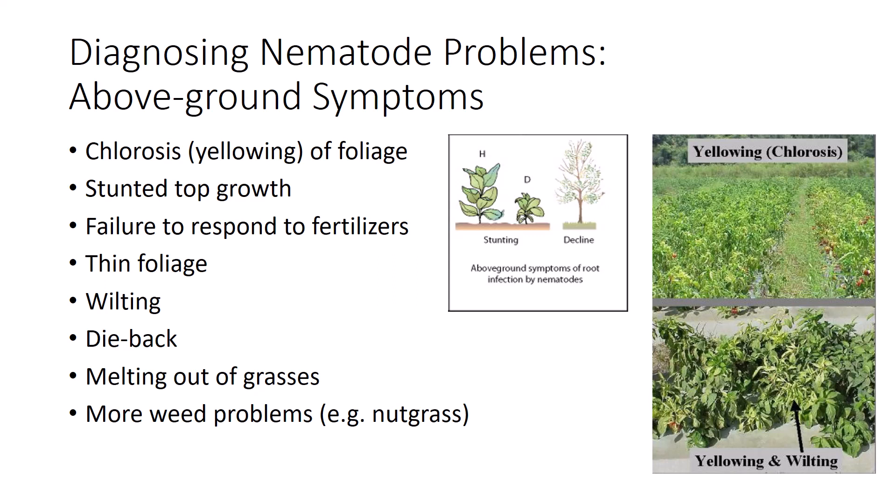Since most plant nematodes affect root functions, most symptoms associated with them are the result of inadequate water supply or mineral nutrition to the tops: chlorosis, yellowing or other abnormal coloration of the foliage, stunted top growth, failure to respond normally to fertilizers, small or sparse foliage, a tendency to wilt more readily than healthy plants, and slower recovery from wilting. Woody plants in advanced stages of decline may exhibit dieback of progressively larger branches. Melting out or gradual decline is typical of nematode-injured turf and pasture. Plantings stunted by nematodes often have worse weed problems because the crop is less able to compete with weeds. These symptoms can easily be mistaken for the effects of drought, general stress, or fungus.